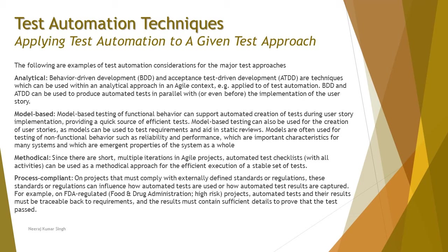The third approach is the Methodical approach, which is more method-oriented and aligned with organizational standards. Product-based organizations prefer this approach. Since agile projects have short multiple iterations, automated test checklists can be used as a methodical approach for efficient execution of a stable set of tests.